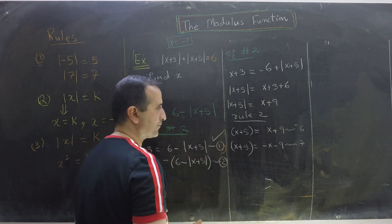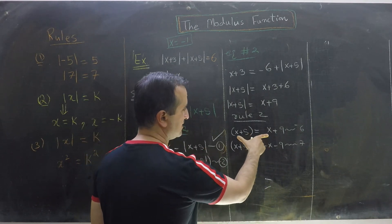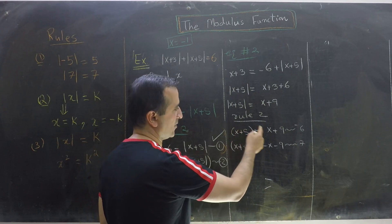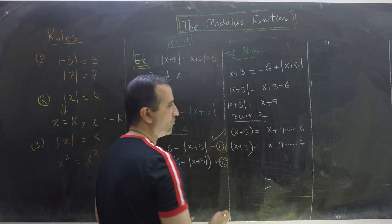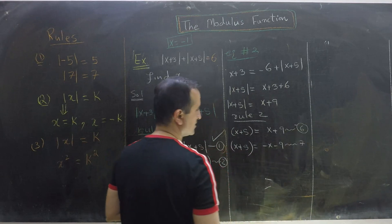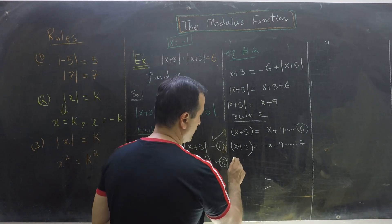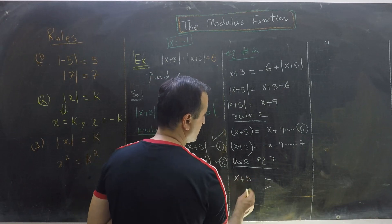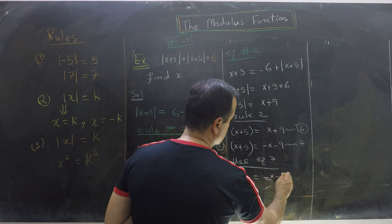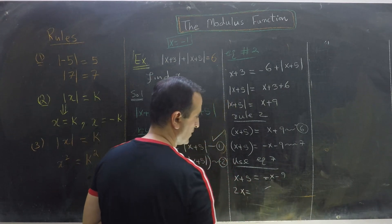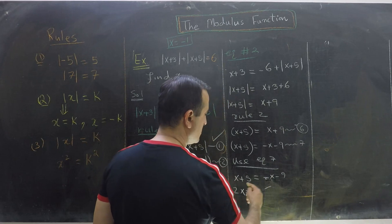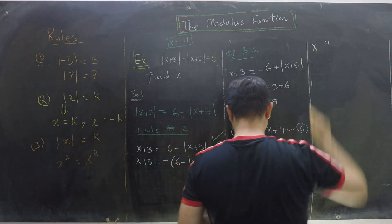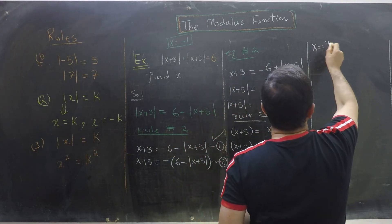Using Equation 6: x plus 5 equals x plus 9 — the x terms cancel, so Equation 6 gives no value of x. Using Equation 7: x plus 5 equals minus x minus 9, so 2x equals minus 9 minus 5, which equals minus 14. Therefore x equals minus 7.